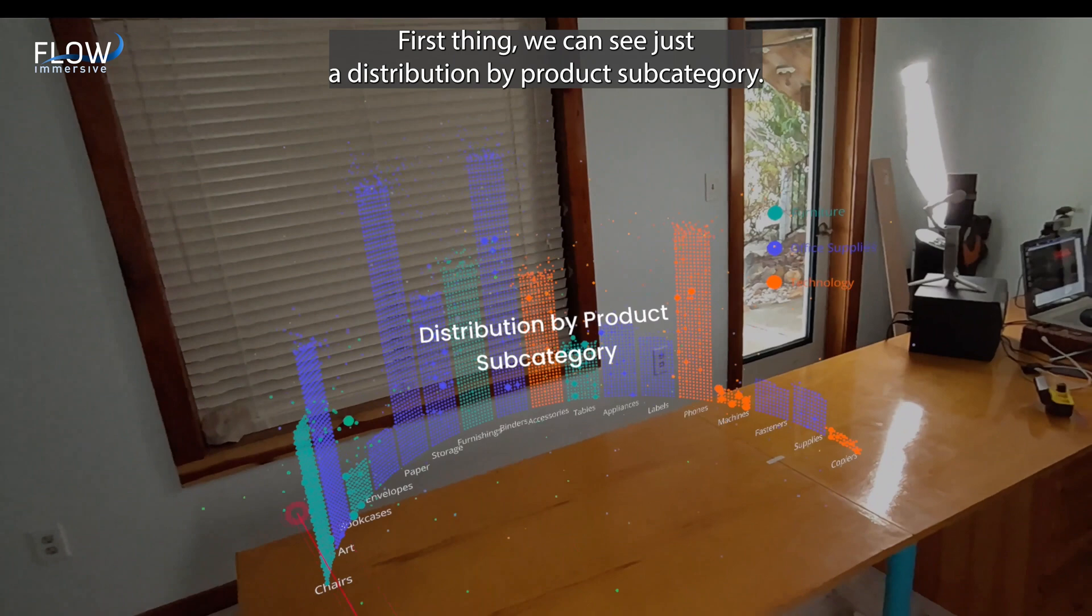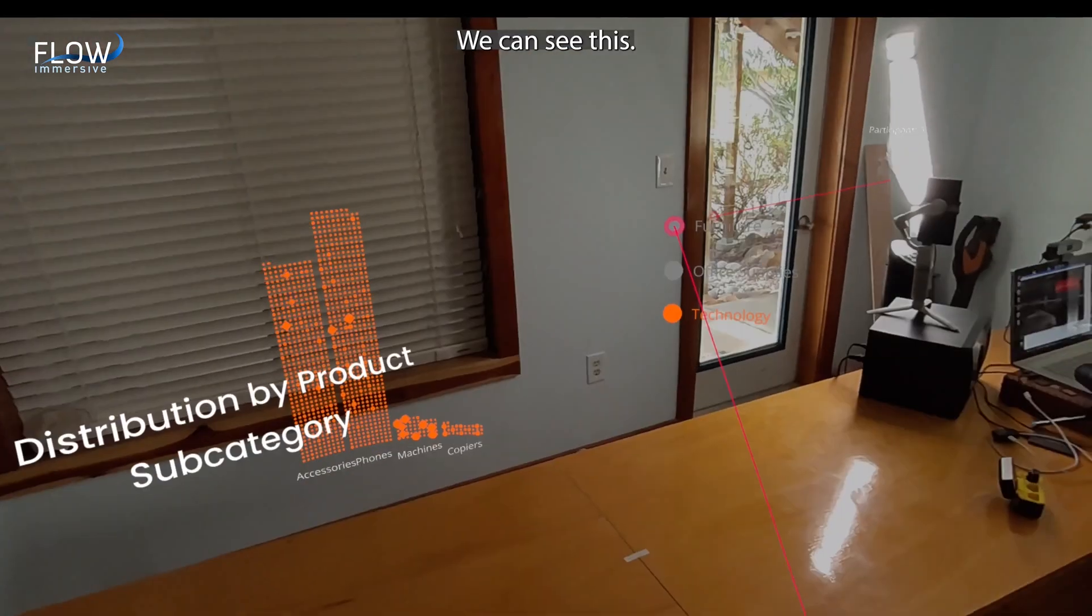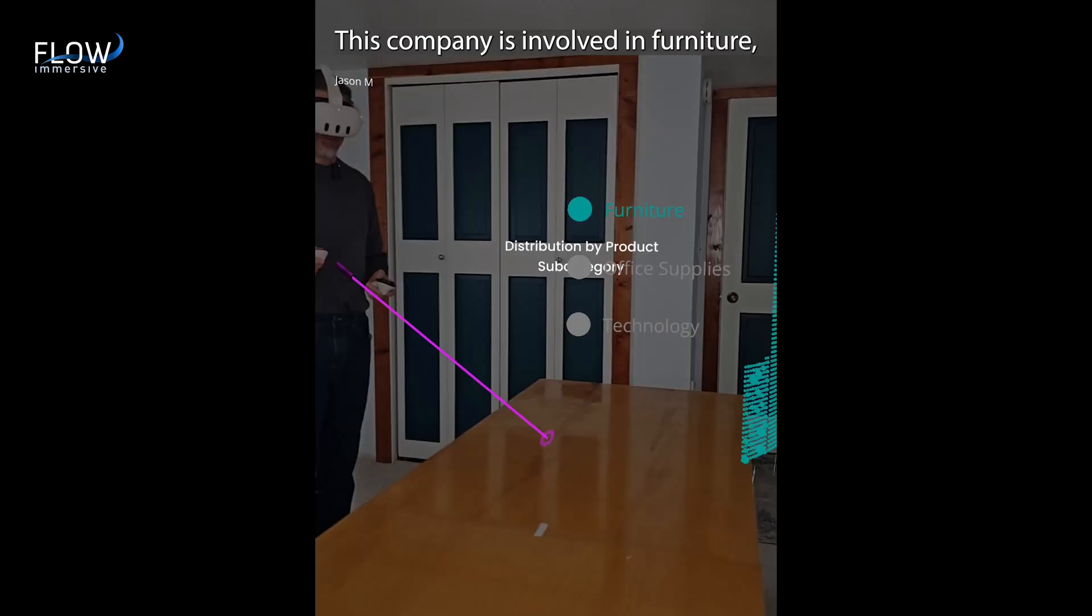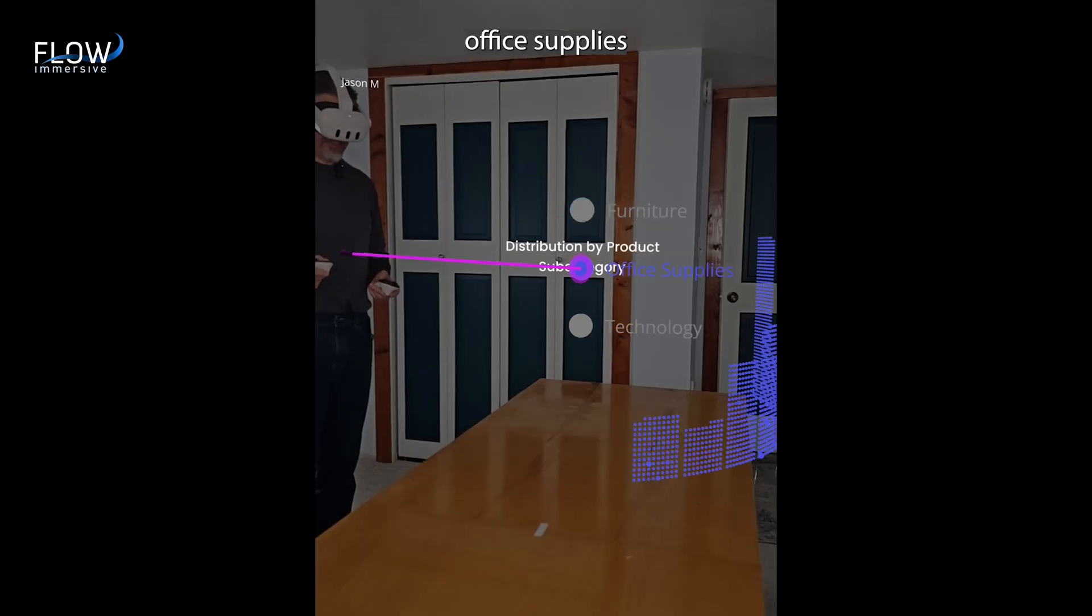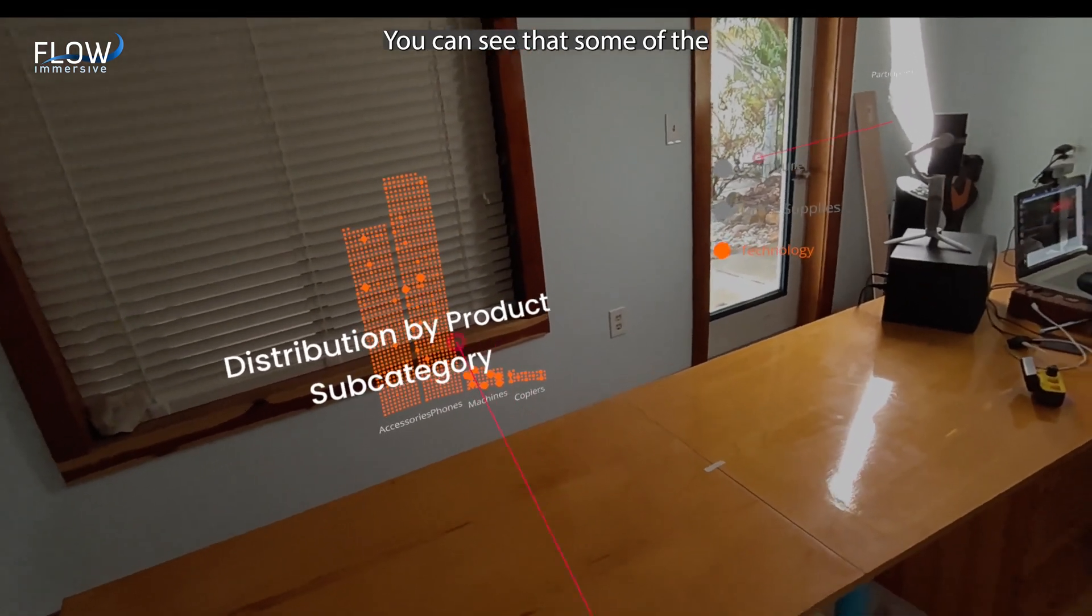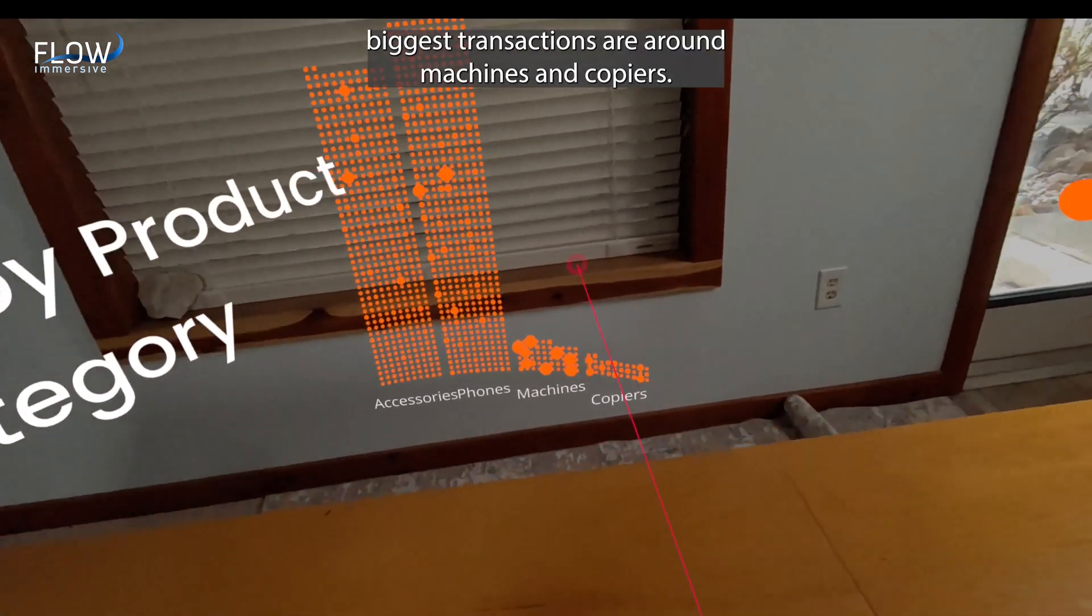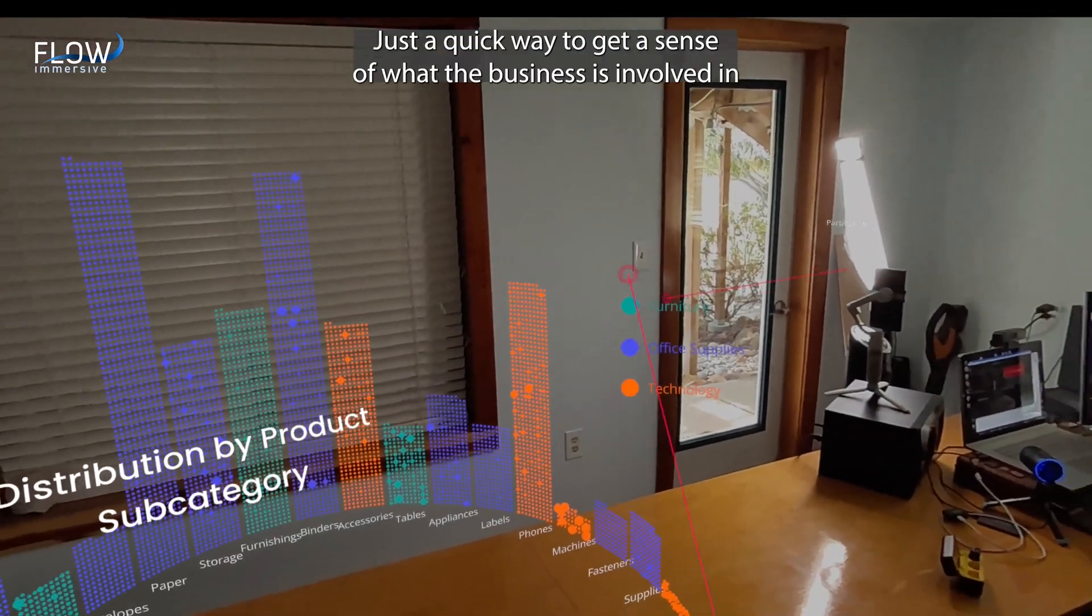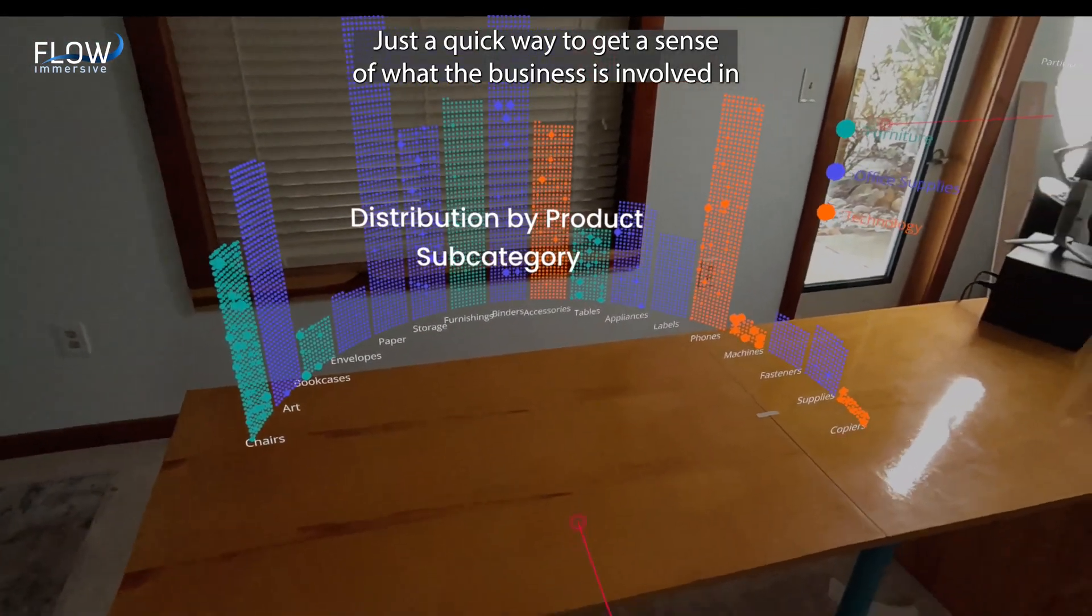First thing is we can see just the distribution by product subcategory. You can see that this company is involved in furniture, office supplies, and technology, especially like machines and copiers. You can see that some of the biggest transactions are around machines and copiers. Just a quick way to get a sense of what the business is involved in.